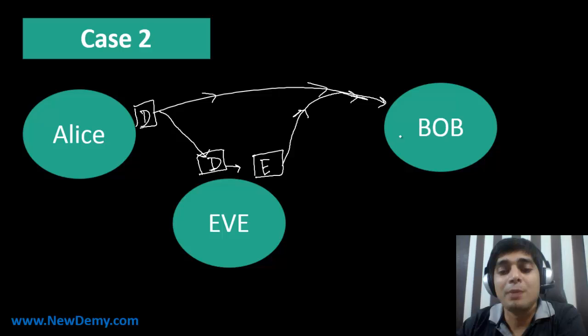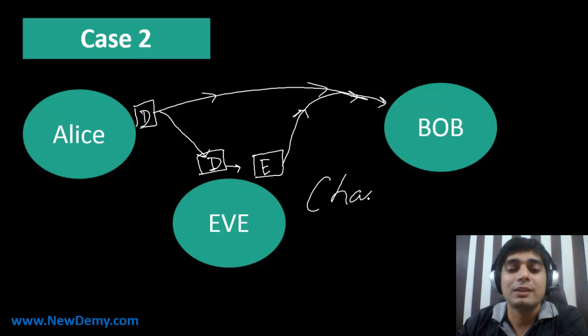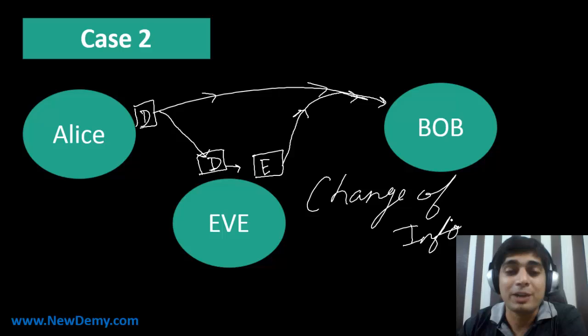Eve has transmitted it back to Bob via the same route or protocol. Now what has happened—Bob is assuming that the information came from a reliable source, Alice. But ultimately, it's not reliable information. It's changed information. So we're facing change of information. Bob has no idea that information is being changed. Second problem, very major one.